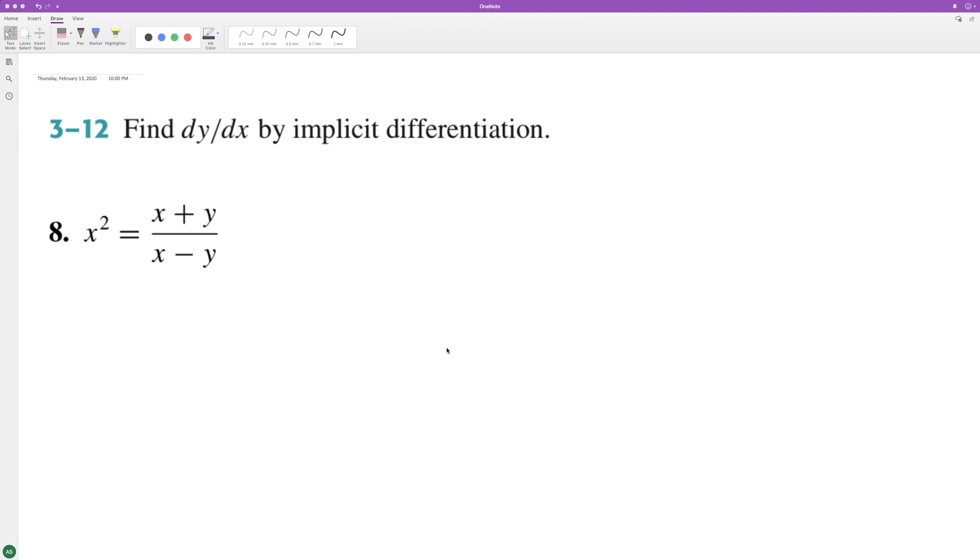We can go about differentiating this with implicit differentiation. We can use the quotient rule on the right, or we can multiply and get rid of the denominator on the right and do the product rule. I'll do that.